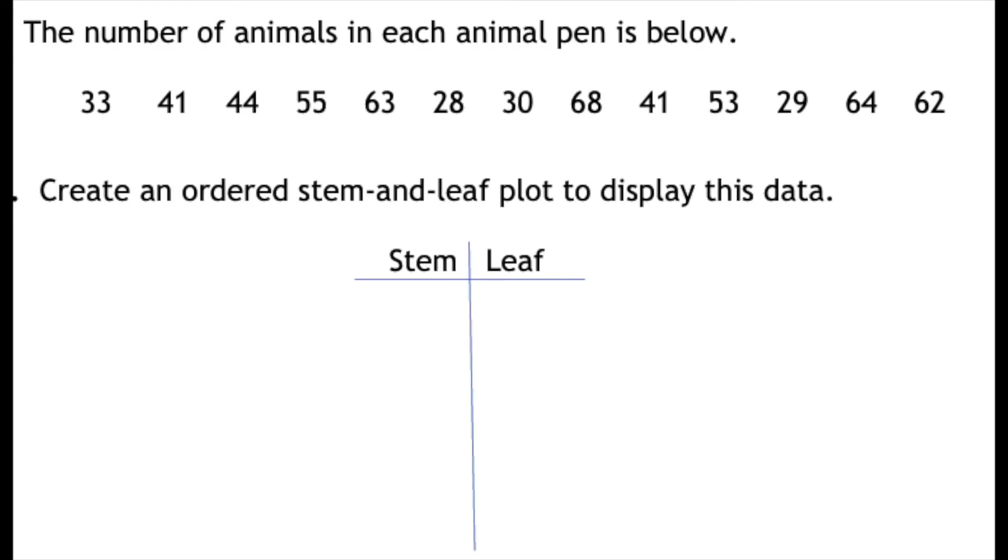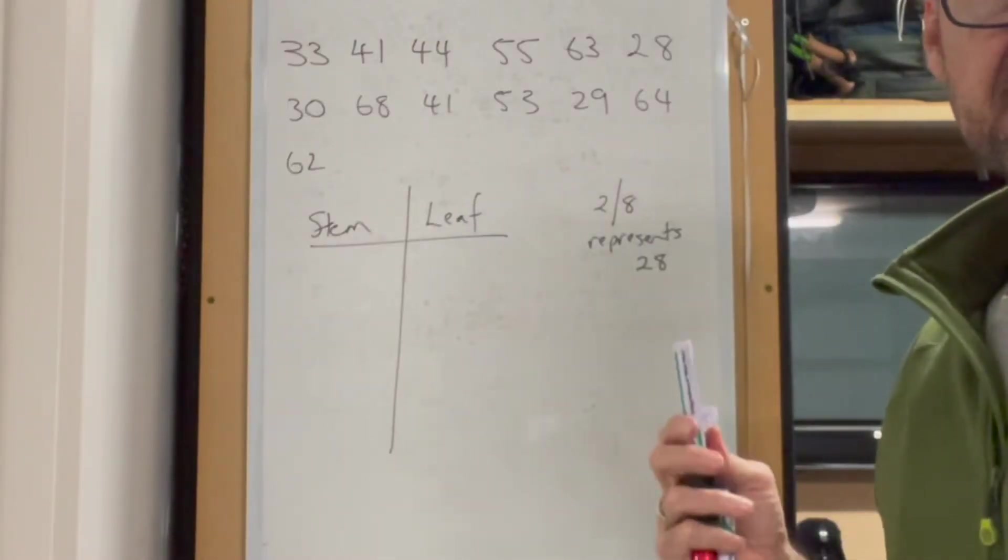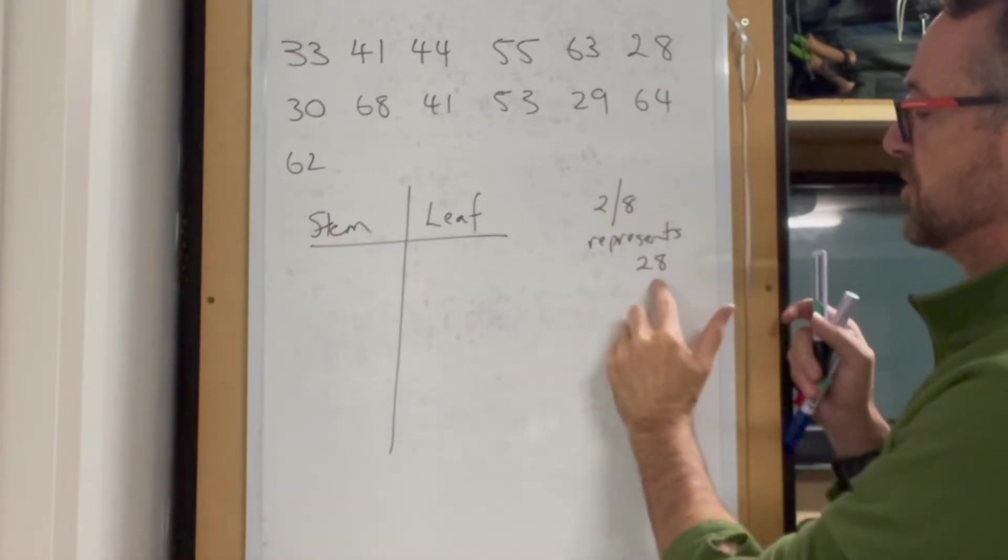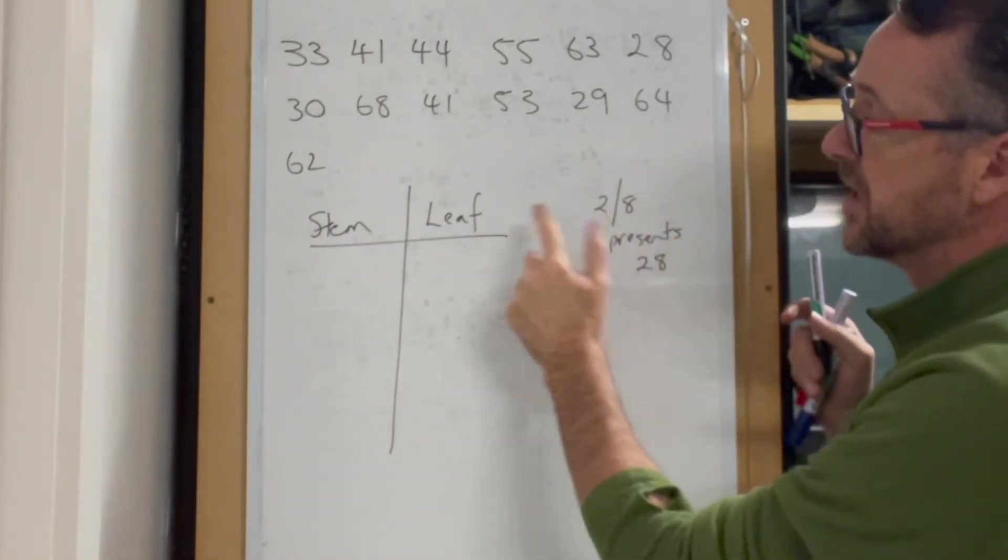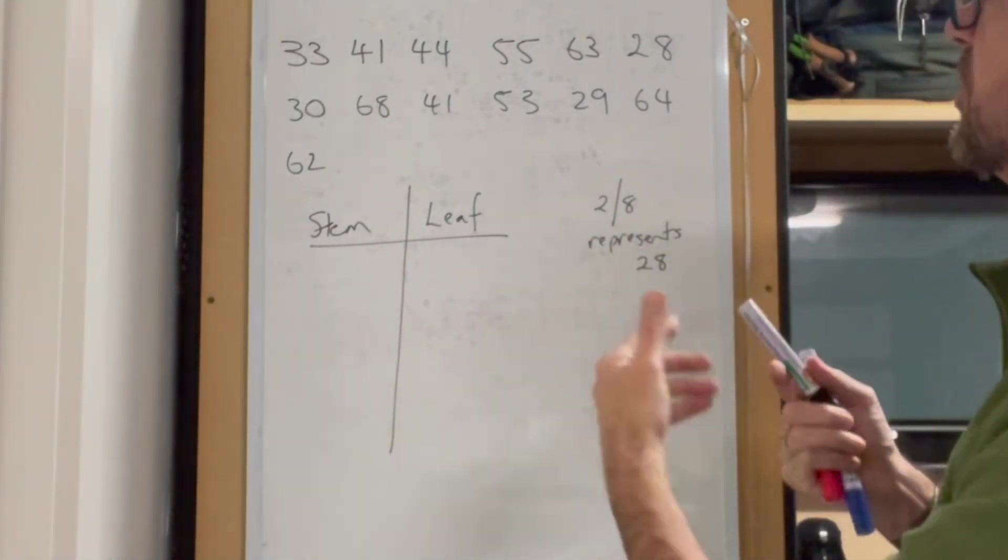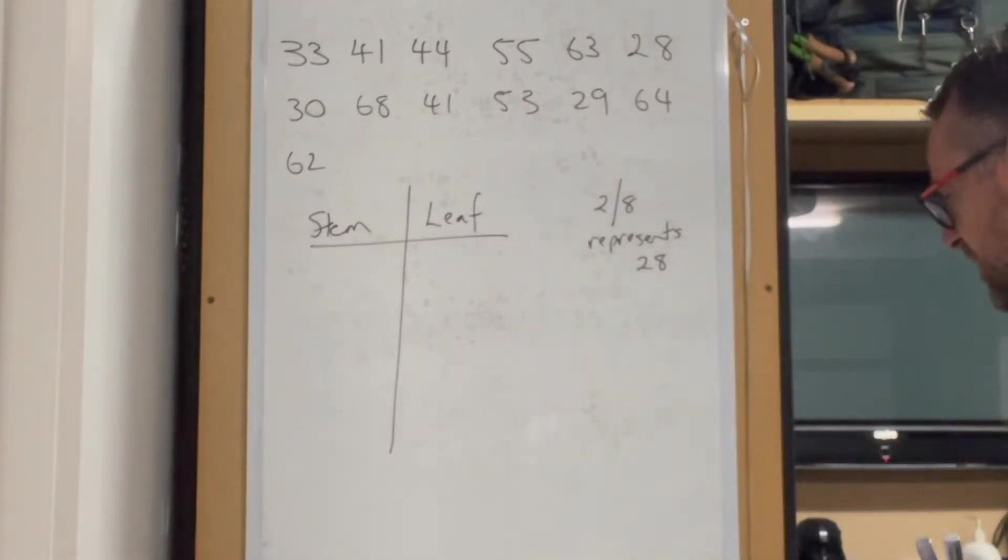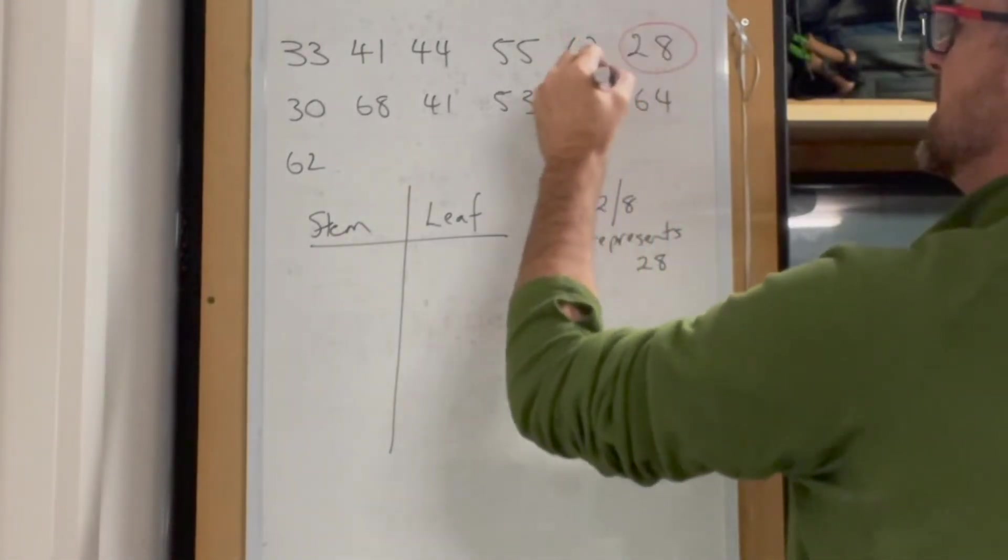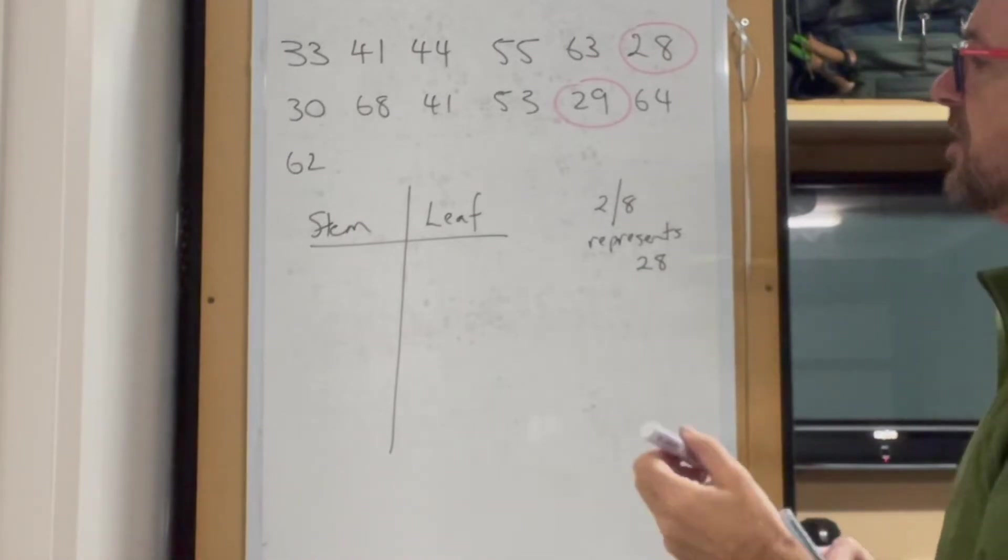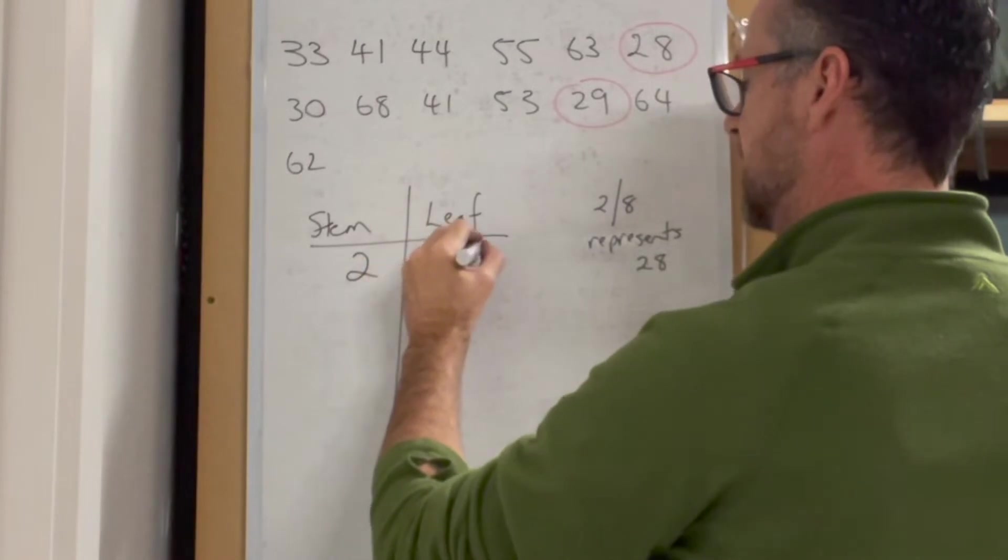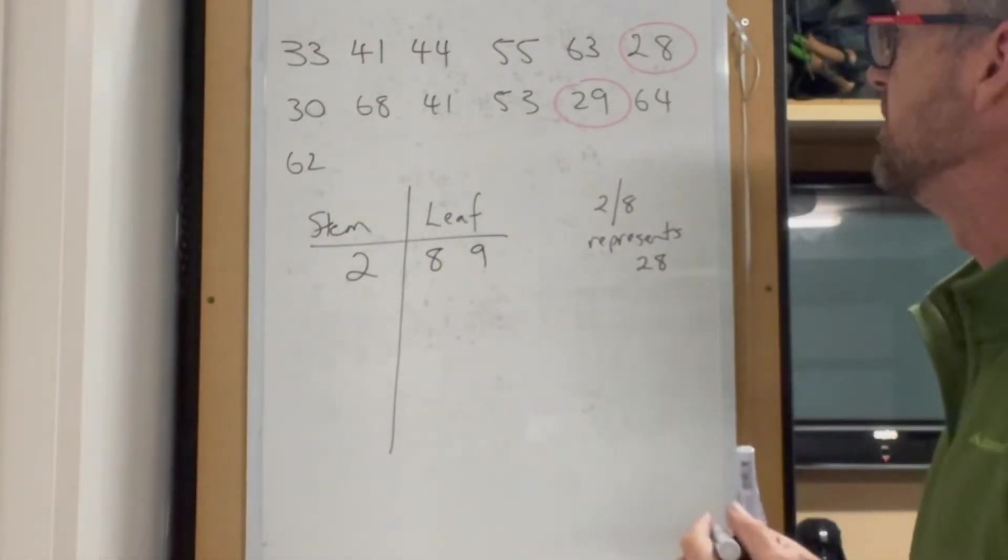We're given a set of data to create a stem and leaf graph. Set up your key: 2 | 8 represents 28. The tens value goes in the stem column, units in the leaf. My smallest value is 28, so I look for all numbers in the 20's: 28 and 29. Write them in order - 8 then 9 - in ascending order, and circle them so I know I've used them.